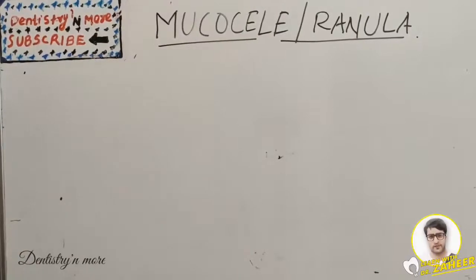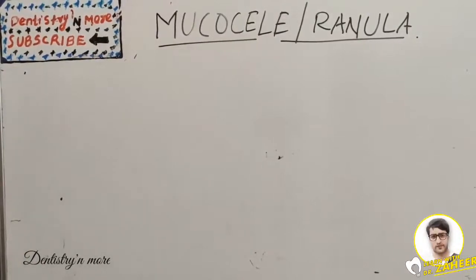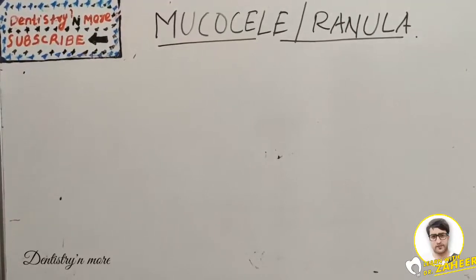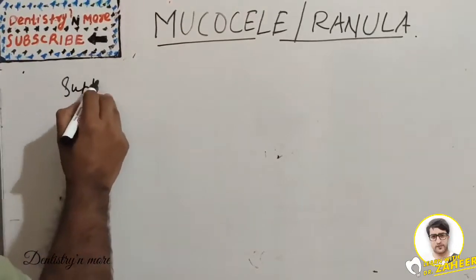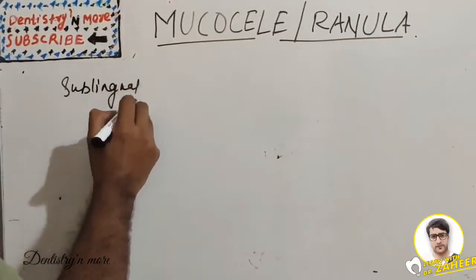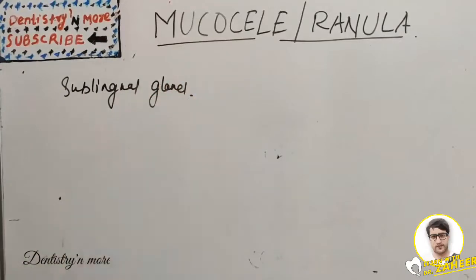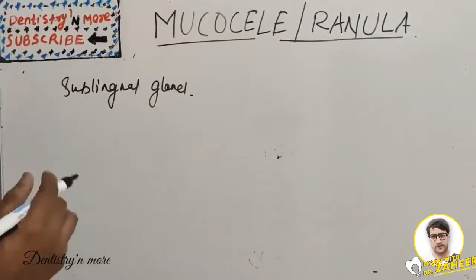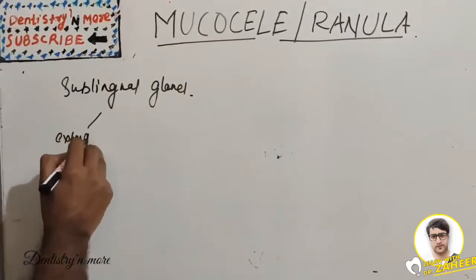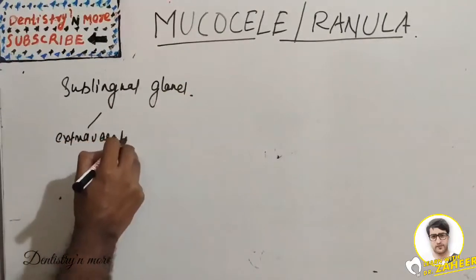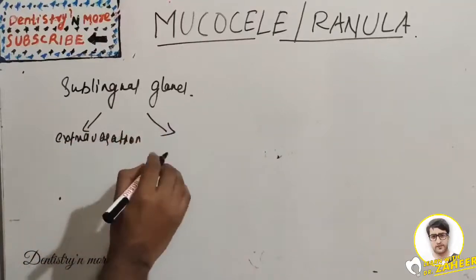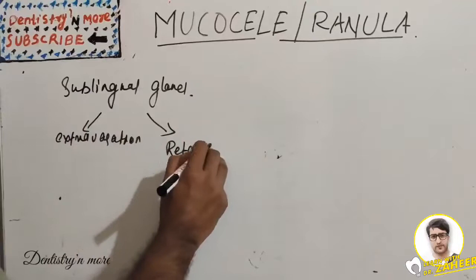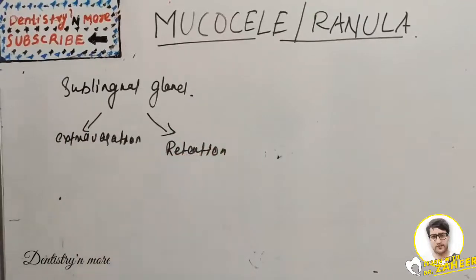Welcome back to another session in Dentistry and More. Today's topic is mucocele or ranula. Mucus is the exclusive secretory product of the accessory minor salivary glands and the most prominent product of the sublingual gland. The mechanism for mucus cavity development is either extravasation or retention — these two mechanisms can result in mucus cavity development.